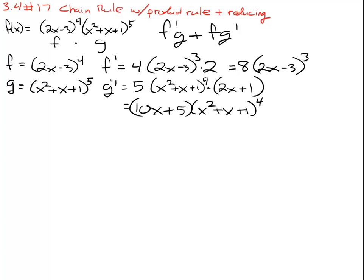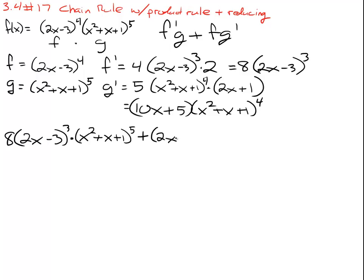Now it's just a matter of plugging our four pieces into the product rule: f prime times g — the original second piece — plus f, the original piece, times g prime. And that is our derivative.